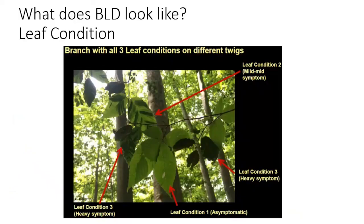What does beech leaf disease look like? What should you be looking for in the field? Here we're looking at a picture of a branch that has three different leaf conditions on different twigs. We have an asymptomatic leaf — what you would traditionally see on American beech, very healthy looking and very green in the interveinal region. Here we have what I consider a mid-symptom leaf. The key characteristic you're looking for is this dark banding pattern in the interveinal region of the leaf. We also have heavy symptom leaves, characterized by a large percentage of necrotic tissue — the leaf is completely blackened and curled in along the edges. These are three different stages of disease.